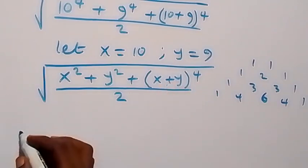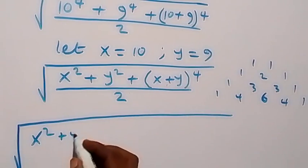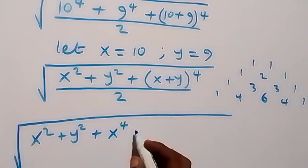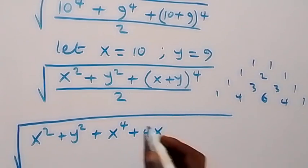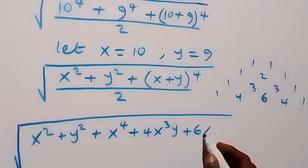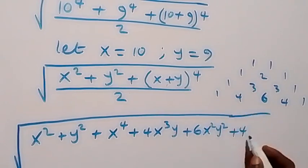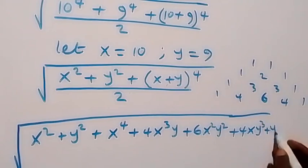This gives us: square root of x squared plus y squared, then plus x raised to power 4, then plus 4x cubed y, plus 6 as the coefficient then x squared y squared, then plus 4 as the coefficient then x y cubed, then plus y raised to power 4 — which has a coefficient of 1 — all over 2.